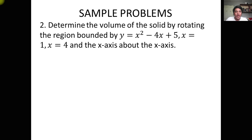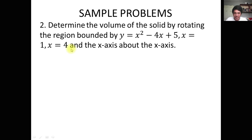For our next problem, we have to determine the volume of the solid by rotating the region bounded by Y = x² − 4x + 5, x = 1, and x = 4, about the X-axis. The axis of rotation is the X-axis. We're going to use the disk method again because we have a parabola bounded by certain points on the X-axis.